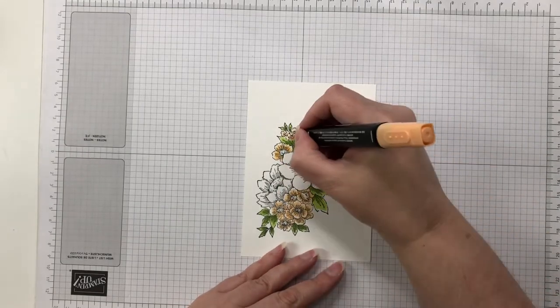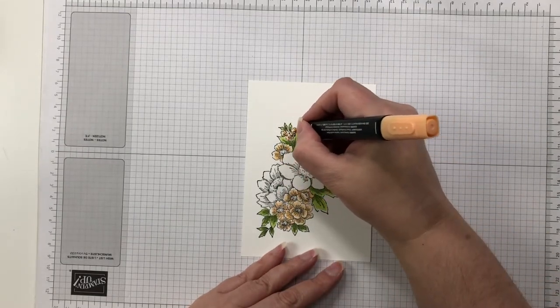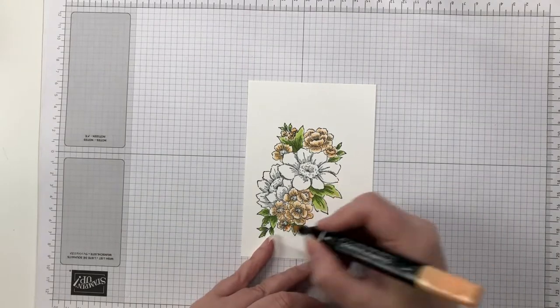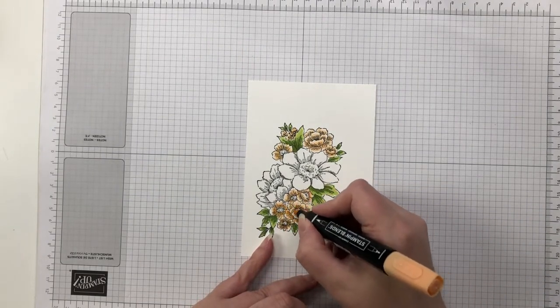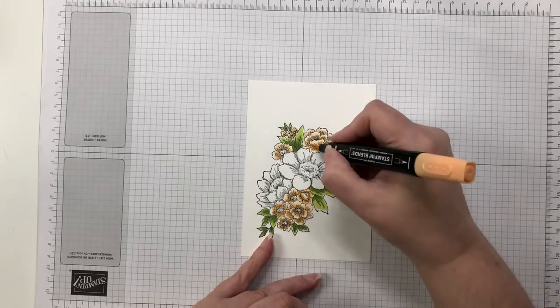So after I finish this I come back in, get my light again and color that in, go back with the dark and then go over one element I find that I forget. Do you guys do that as well? So as I'm coloring I'm like oh I forgot to add the dark to that so go through again.